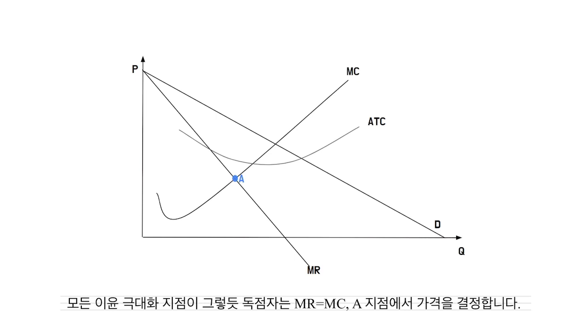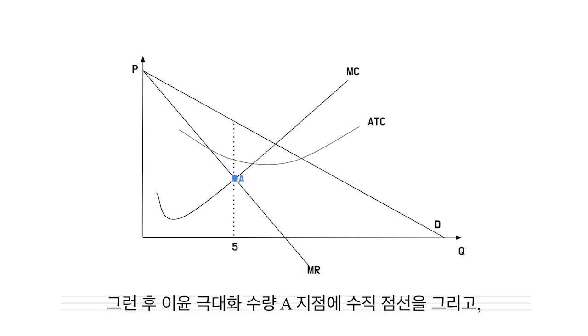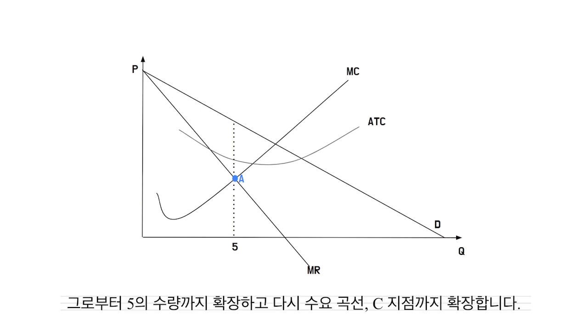As all profit-maximizing points, a Monopoly determines price at where MR equals MC, which is point A. Then we should draw a vertical dashed line at the profit-maximizing quantity, point A, extended down to the quantity of 5 and back up to the demand curve, point C.